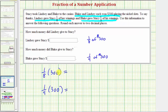So again, 1/8 times 300 is equal to 37.5, and 1/9 times 300 is approximately 33.33. So Lindsey gave Stacy $37.50, and Blake gave Stacy $33.33.